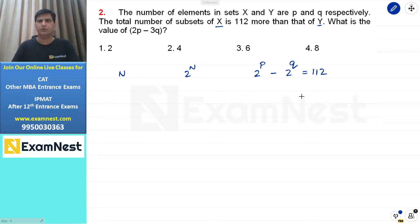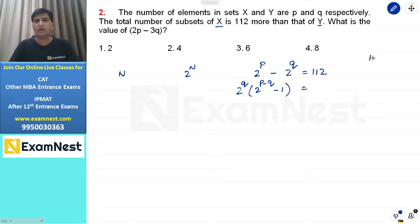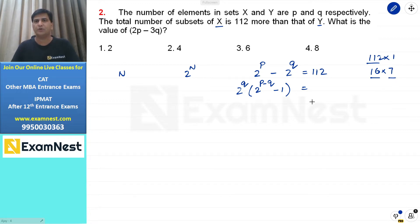P और Q की value मालूम होनी चाहिए। 112 को break करते हैं। अगर 2^Q common लें, तो एक factor 2 की power होना चाहिए और दूसरा odd होना चाहिए (2^(P-Q) - 1)। 112 को 16 × 7 लिख सकते हैं — 16 यानि 2^4, और 7 = 2^3 - 1। इसे 2^7 - 2^4 लिख सकते हैं।